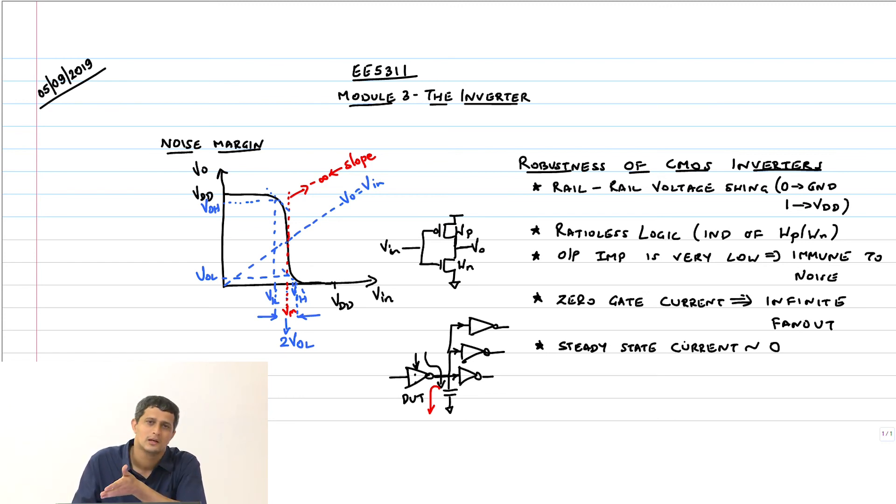This current is actually leakage. Only now it has started to show up significantly, maybe last 2-3 generations leakage current has started to show up significantly, but for a long time this leakage current was really negligible.